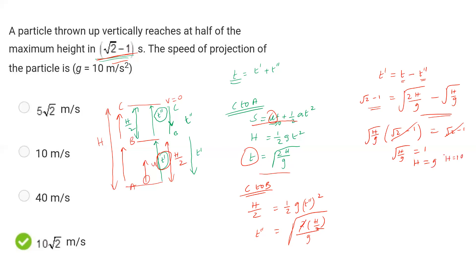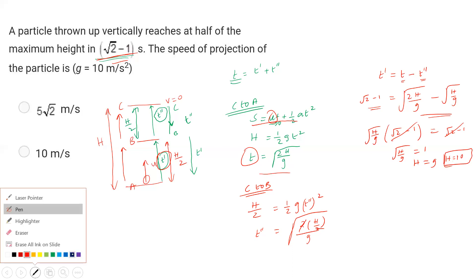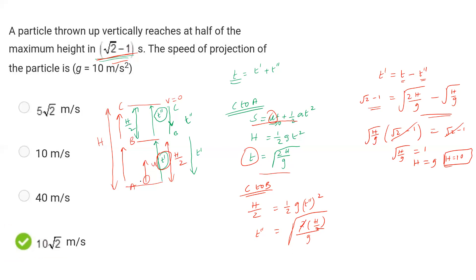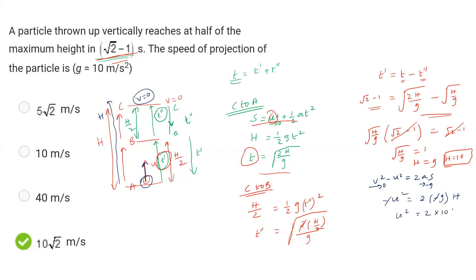Since h equals g, the height is 10 meters. Now we can find the initial velocity. The particle is projected upward, final velocity is 0 at maximum height, and acceleration a = -g. Using v² = u² + 2as: 0 - u² = 2(-g)(h), so u² = 2 × 10 × 10 = 200, giving u = 10√2 m/s.